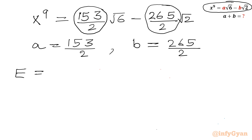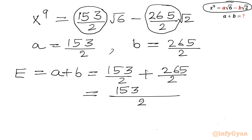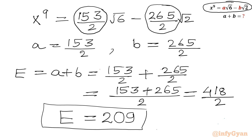Now our expression, let me call it a plus b. This will be 153 over 2 plus 265 over 2. The denominator is common, so I will be writing 153 plus 265, which gives 418, and 418 divided by 2. So our final answer will come out as 209. And this brings the end of this video. Thank you friends for watching — do not forget to like, share, and subscribe. Bye-bye till next video.